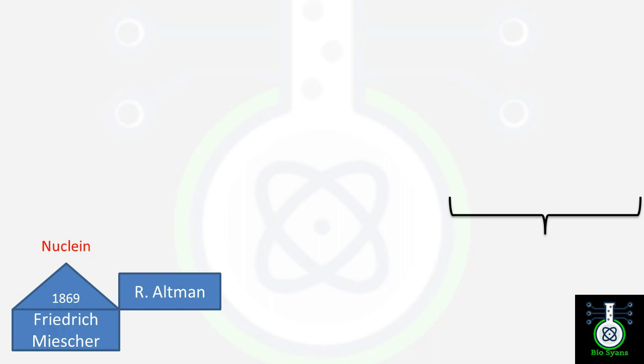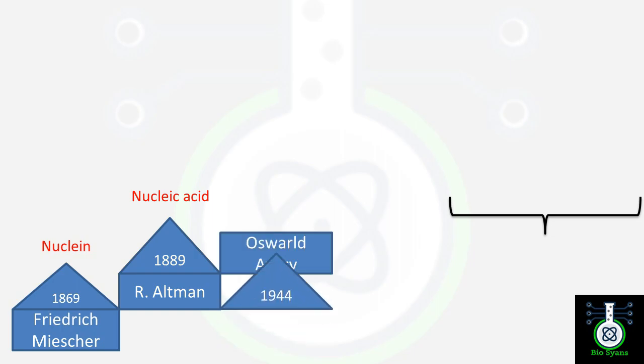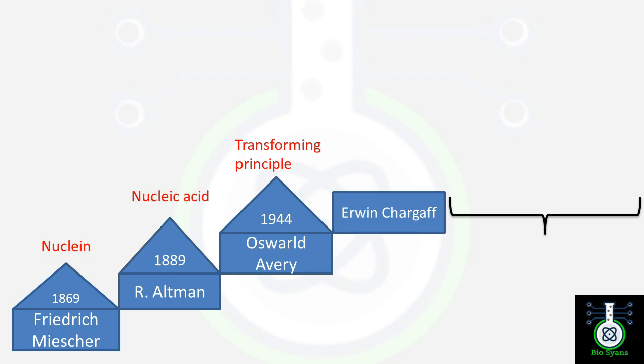Professor Oswald Avery in 1944 identified DNA as a transforming principle and further provided evidence that DNA is a genetic material. Erwin Chargaff in 1950 said that DNA is species-specific.